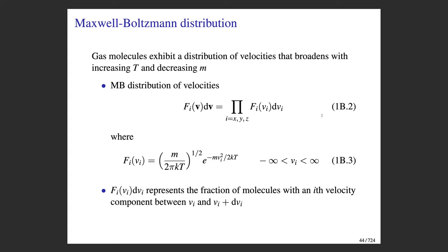The Maxwell-Boltzmann distribution does this for us. Molecules exhibit a distribution of velocities, a distribution of speeds, and a distribution of kinetic energies — the Maxwell-Boltzmann distribution is that distribution. It shows us that gas molecules exhibit a distribution of velocities and that distribution broadens — meaning it spreads out — when temperature increases and when the mass of the molecules decreases.